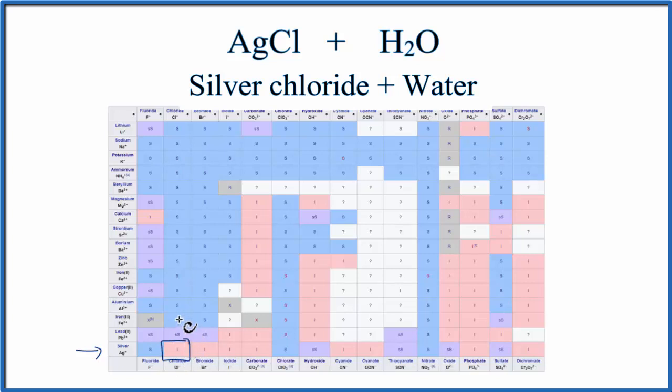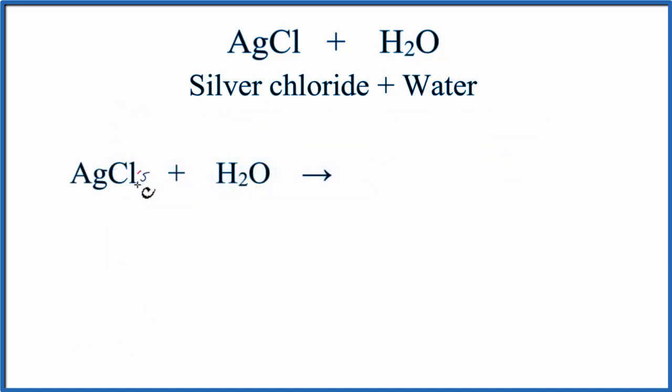It won't dissolve in water. So when you put solid silver chloride in water, it's not going to dissolve. Let's go back to our equation. We have our solid, a little S there for solid, and L for liquid water. When we put the silver chloride in the water, it's insoluble.